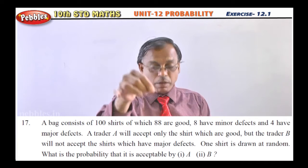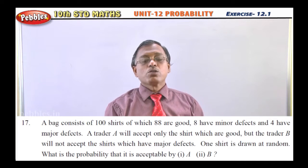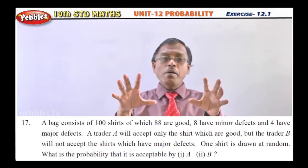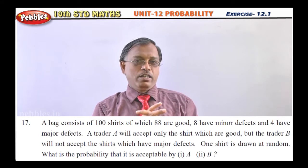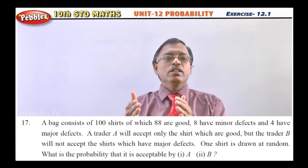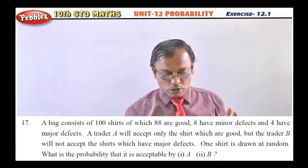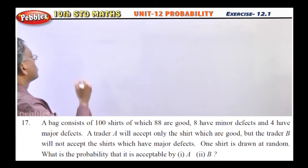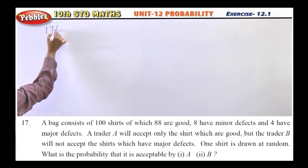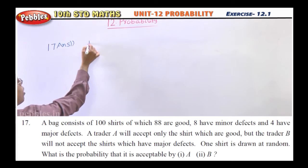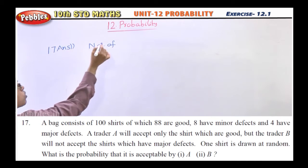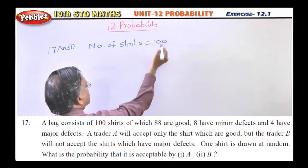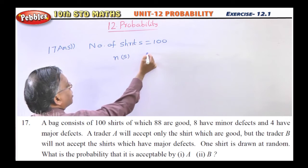What is the probability that it is acceptable by A and B? For each trader we have to find the probability separately using the probability definition. First we have to see how many total number of shirts are there — that is n(S). The total number of shirts is equal to 100, so n(S) = 100.